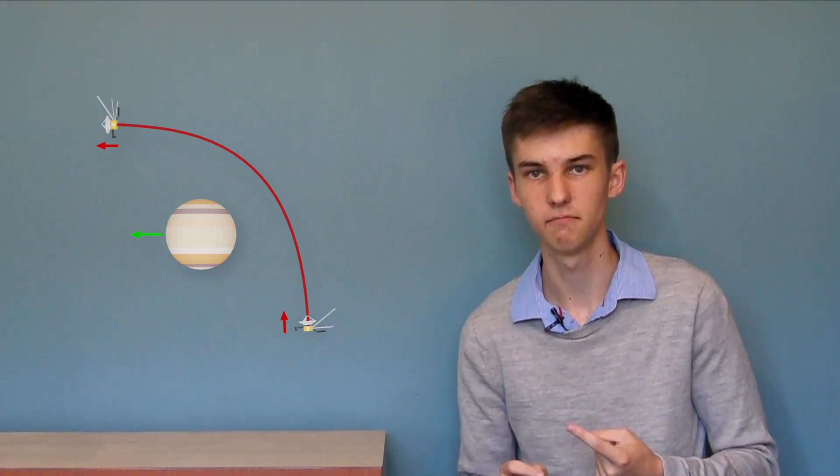Well, the trick to that is that we have to remember that this whole view we're looking at is orbiting around the sun with this speed. So we put that speed on the planet, and then we put that speed on the spacecraft as it's approaching, and we put it on the spacecraft as it's going away. When we combine the speed of the spacecraft relative to the planet and the speed of the spacecraft around the sun, we see what happens.